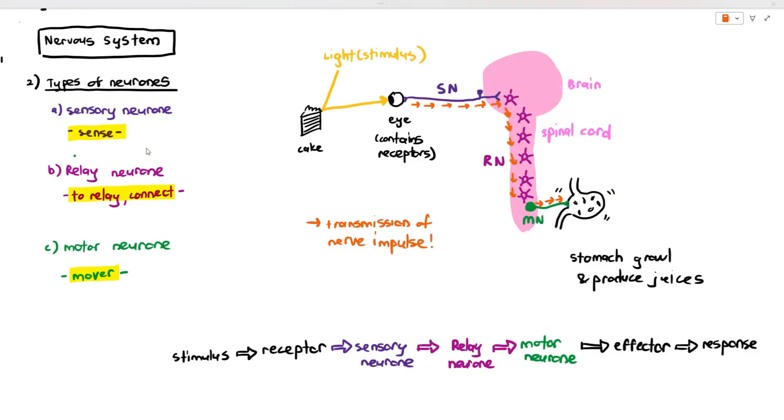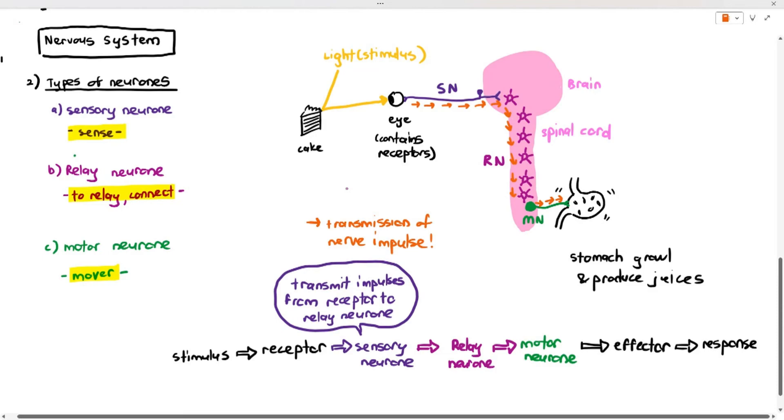What is the function of the sensory neuron? The function of the sensory neuron is to transmit impulses from the receptor to the relay neuron inside the central nervous system. You can say relay neuron if you want to. You can also say transmits impulses from receptor to CNS or central nervous system. That's fine as well.